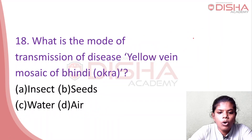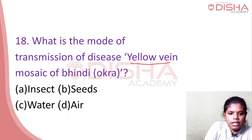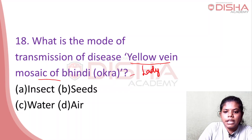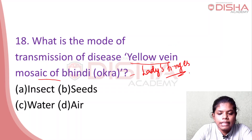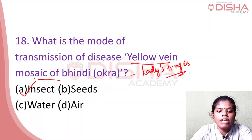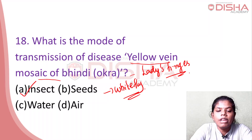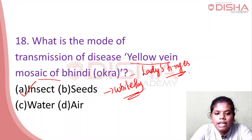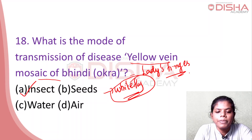Yellow vein mosaic disease of bindi — ladies finger, also known as okra — is spread by an insect called the white fly. The white fly spreads the yellow vein mosaic disease of ladies finger.